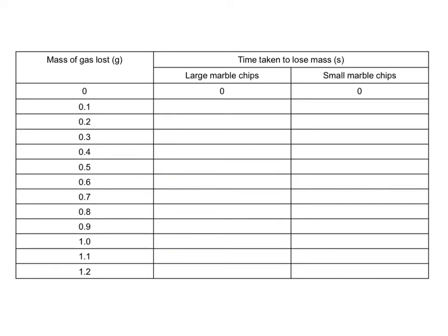We take a set of data looking at the mass lost and the amount of time taken for this to be lost, using probably large marble chips and small marble chips or even powder, and we then graph those results to see what the effect is of using smaller and smaller pieces.